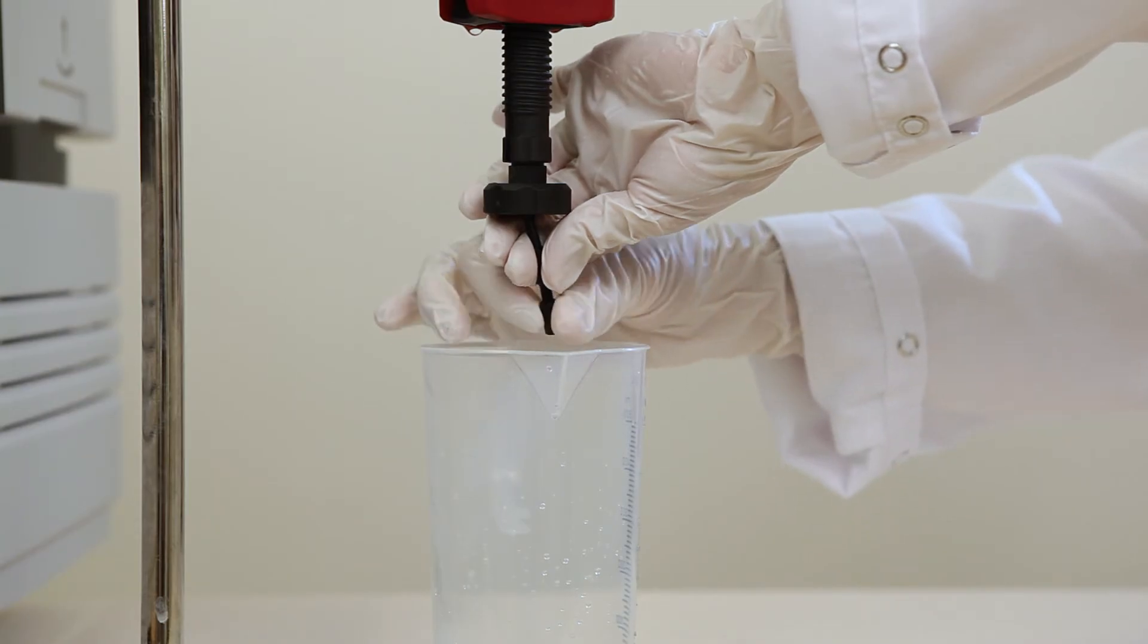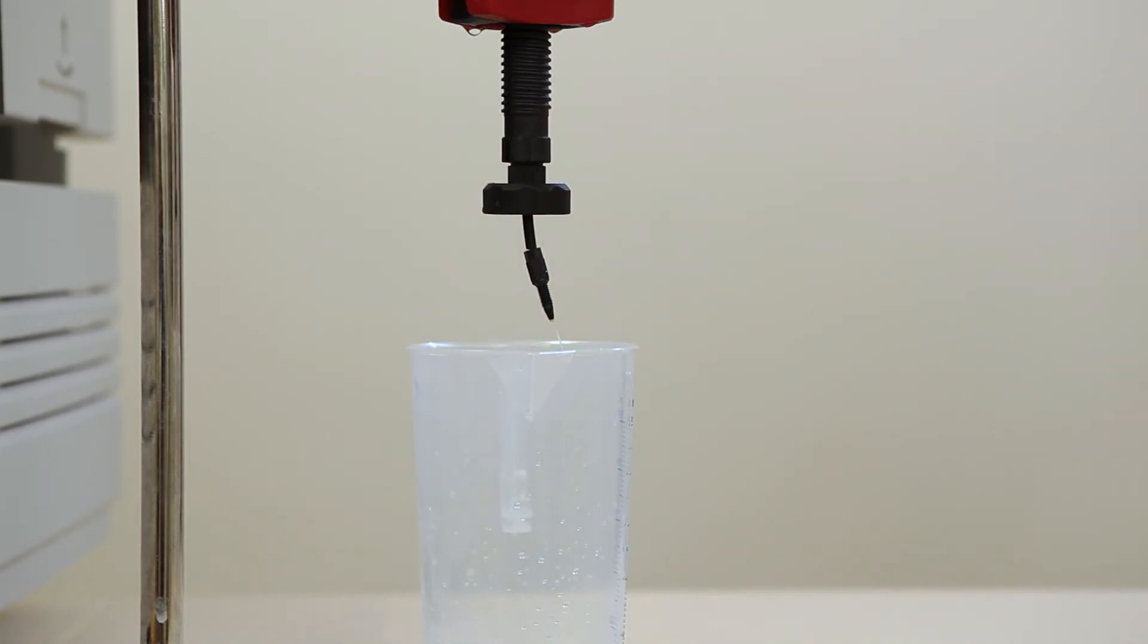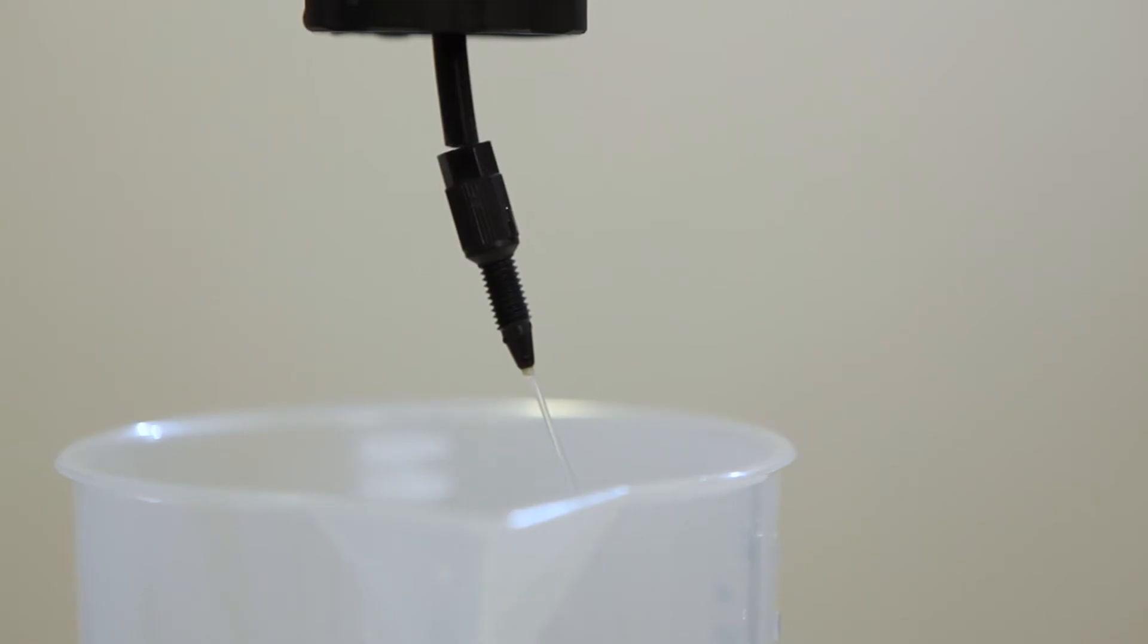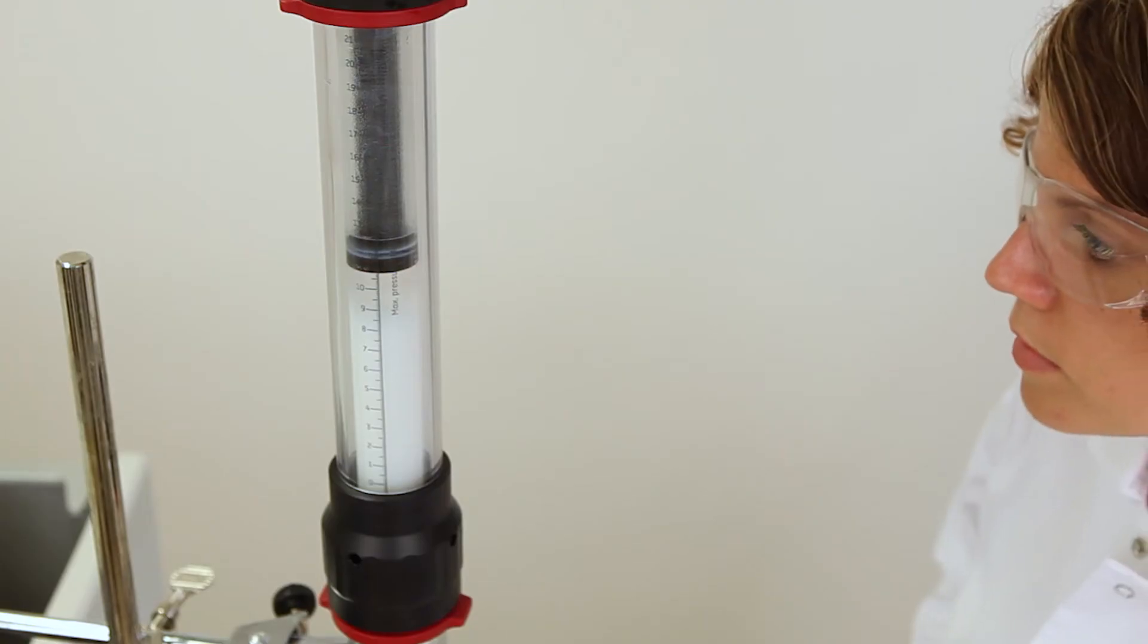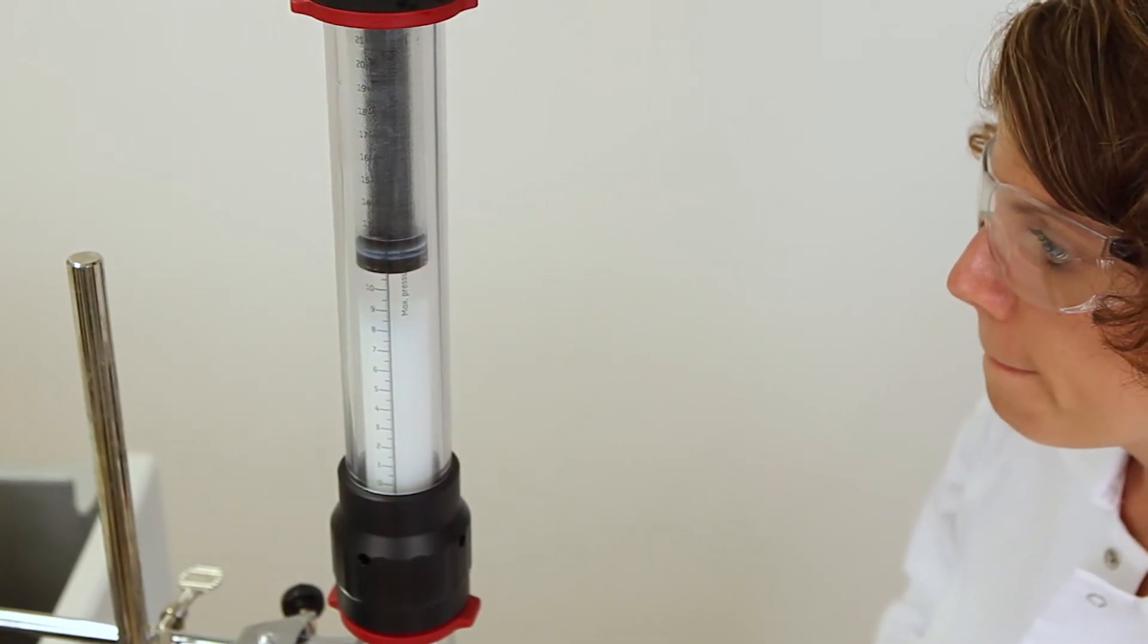Before starting to pack the column, remember to remove the bottom stop plug and then start the pump. The packing flow rate should be maintained until a constant bed height has been reached.